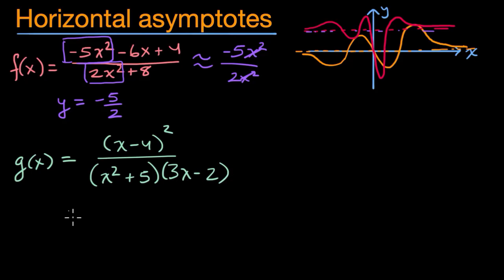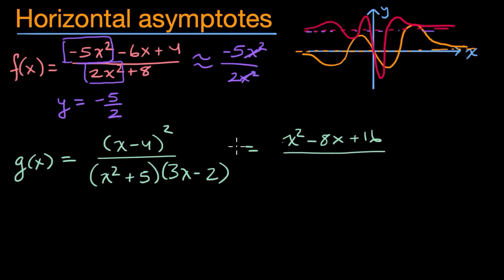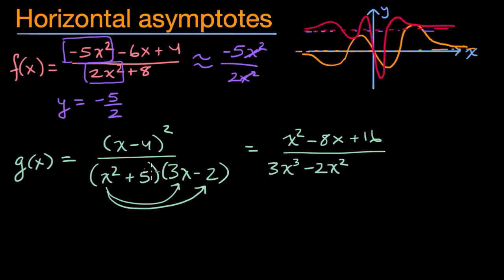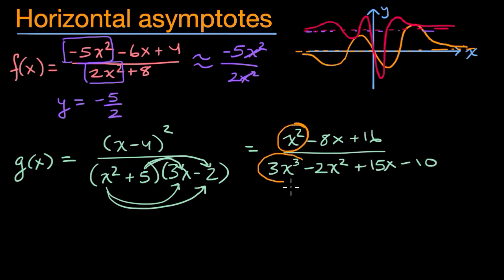Pause the video and have a go at it before we do this together. The key is once again to think about the highest-degree terms in the numerator and denominator. We can expand these out: x minus four squared is x squared minus eight x plus 16. In the denominator, x squared times three x is three x to the third, minus two x squared, plus fifteen x, minus ten.